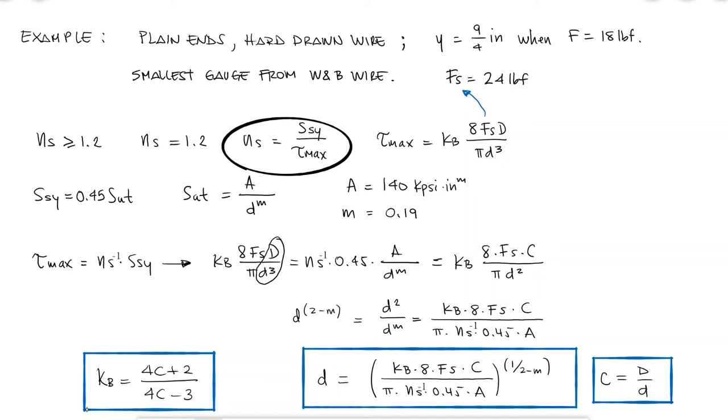Fortunately for us, we have another restriction for c. We want the spring index to be between 4 and 12. So that variable is what will vary and will calculate everything else based on its value.